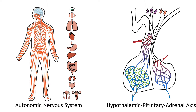The HPA axis is a hormonal response, so it is a slower response relative to the autonomic system. Its downstream effects also promote energy use.